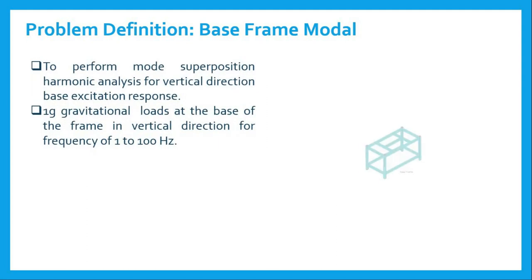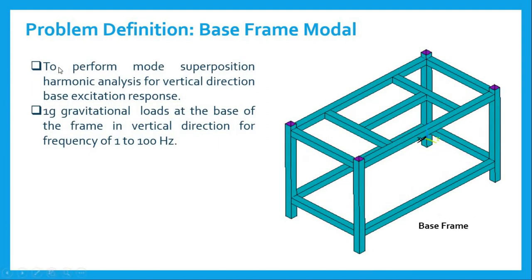This slide represents the actual problem definition of our present simulation. We need to perform mode superposition harmonic analysis for a vertical direction base excitation response. This is the base frame, fixed at the bottom. We will apply a base excitation of 1g gravitational load in the vertical direction for a frequency range of 1 to 100 Hz — similar to excitation on a shaker table, which can be vertical or horizontal.